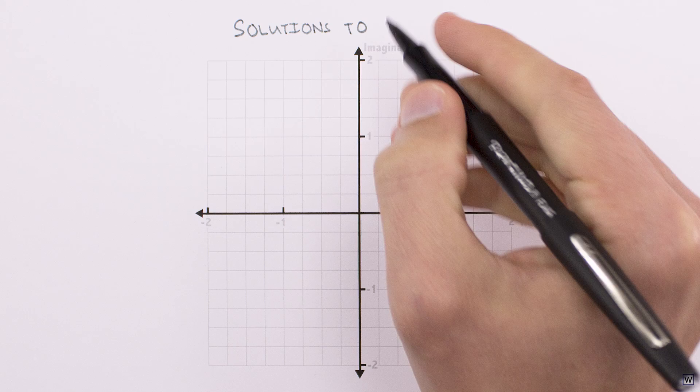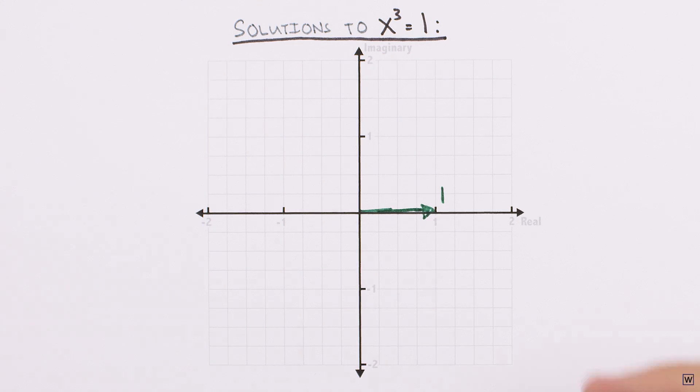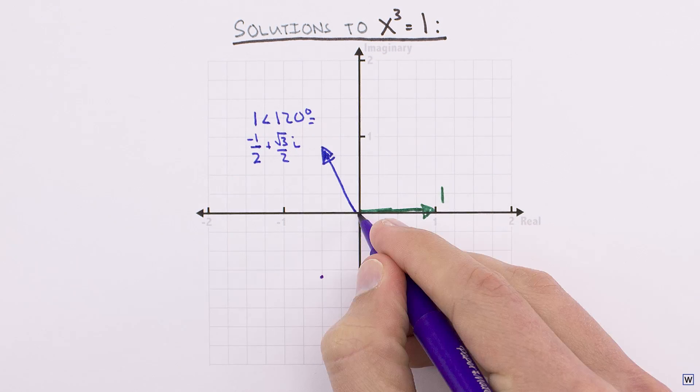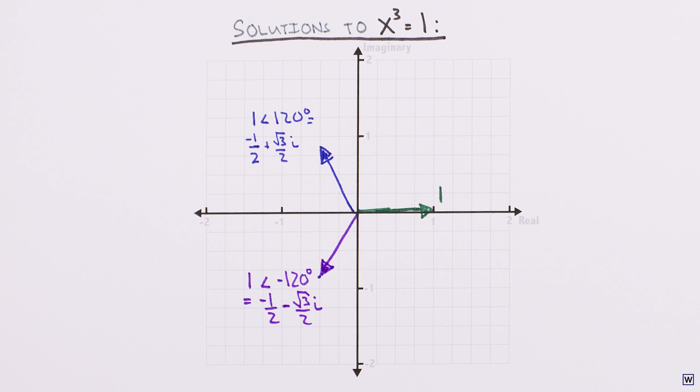So we've found all the answers to our problem x cubed is equal to 1, and shown how the complex plane allows us to find these visually. In this case, using complex numbers saved us some time over the algebraic approach, and for more complicated problems the complex plane becomes even more useful.